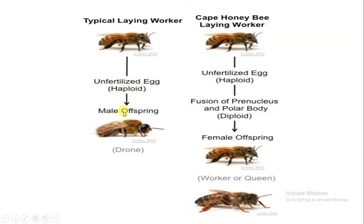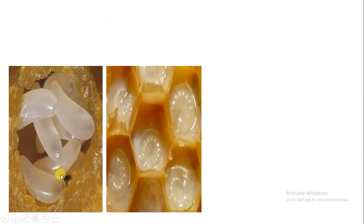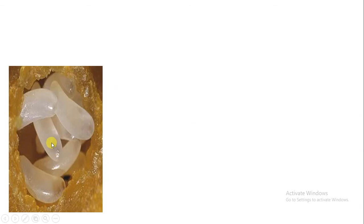Unfertilized eggs — where fertilization with sperm has not occurred — give rise to male offspring, that is the drone. Fertilized eggs, fertilized by the drone's sperm, give rise to females, which can be either a worker or a queen. This is determined by food: if royal jelly is given from the start continuously until the end, the queen is formed. But if royal jelly is not given as food, the larva develops into a worker bee.